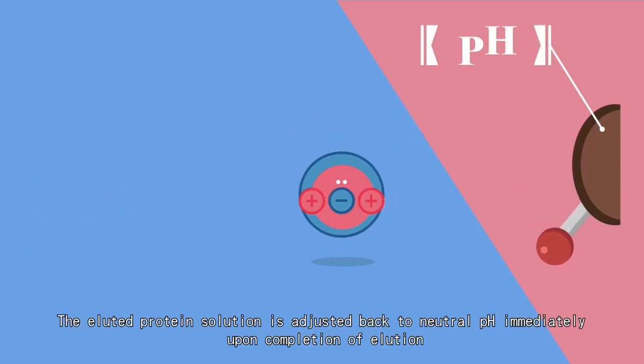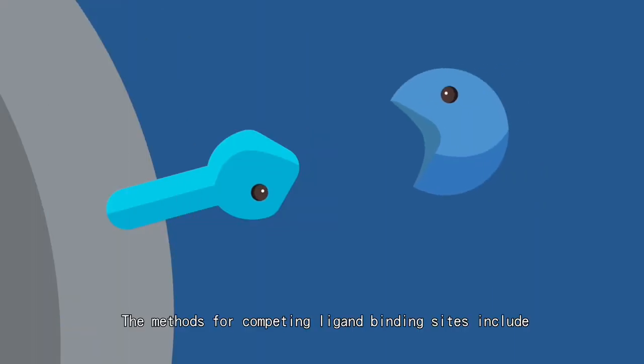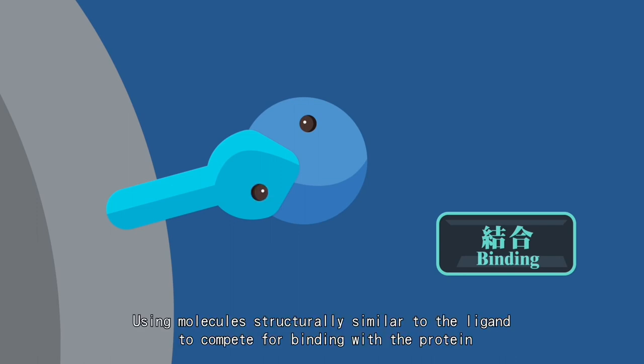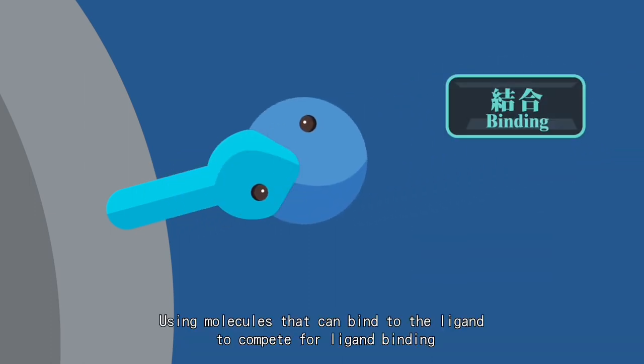The methods for competing ligand binding sites include using molecules structurally similar to the ligand to compete for binding with the protein, or using molecules that can bind to the ligand to compete for ligand binding.